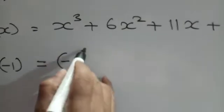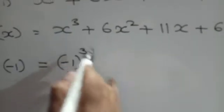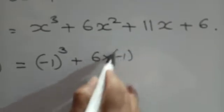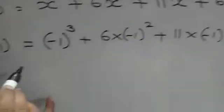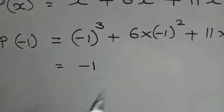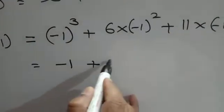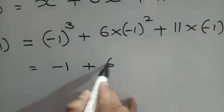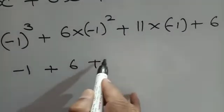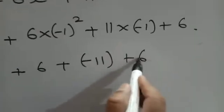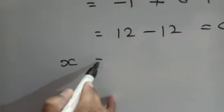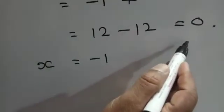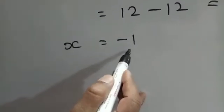When x = -1: p(-1) = (-1)³ + 6(-1)² + 11(-1) + 6. This becomes -1 + 6(1) + (-11) + 6, which gives -1 + 6 - 11 + 6 = 12 - 12 = 0. Since p(-1) = 0, this means x = -1 is a zero of the polynomial, and therefore x + 1 is a factor.